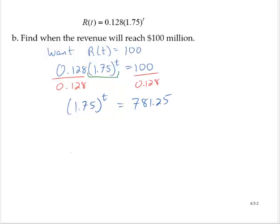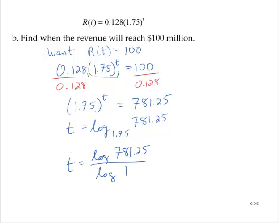Now I'm going to rewrite this in its logarithmic form. So t would equal the log base 1.75 of 781.25. And use the change of base rule. So that would be the log, let me clear that up a little bit. So then t would equal the log of 781.25 divided by the log of 1.75.